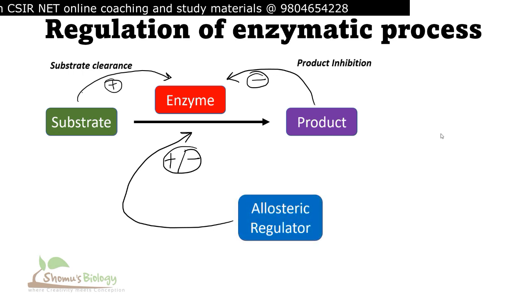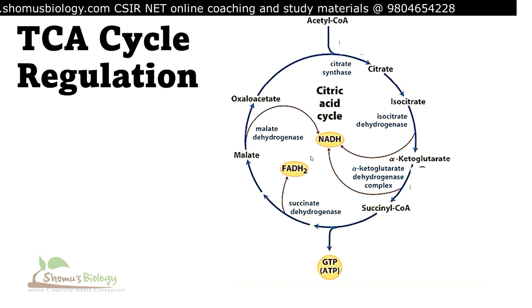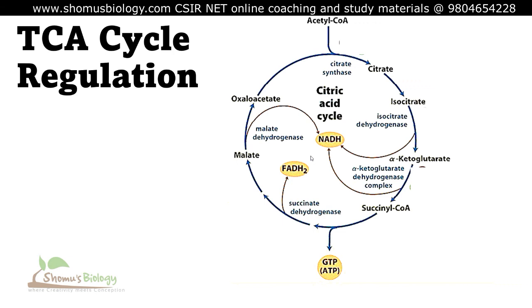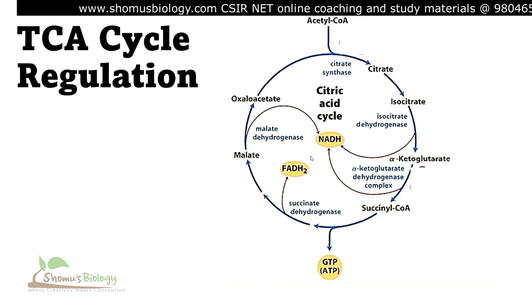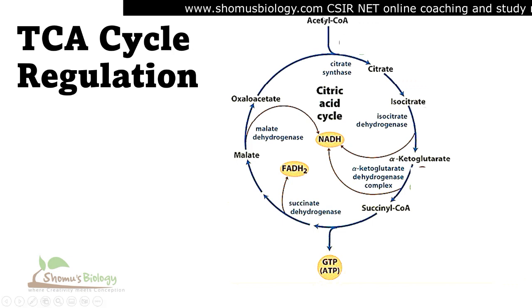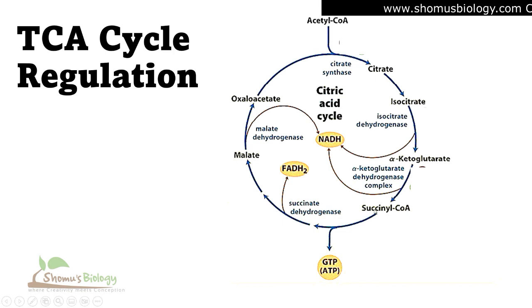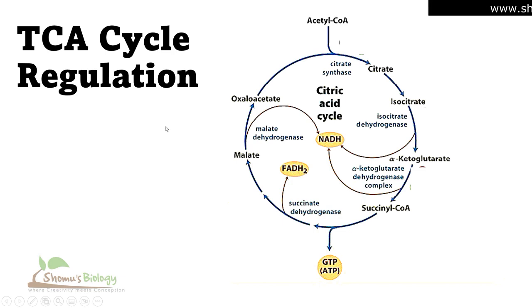Now we are going to talk about TCA cycle regulation. The TCA cycle is also known as the citric acid cycle or tricarboxylic acid cycle. In the Krebs cycle, we start with acetyl-CoA, which associates with oxaloacetate to form citrate. Citrate becomes isocitrate, isocitrate becomes alpha-ketoglutarate, alpha-ketoglutarate becomes succinyl-CoA, which then becomes malate, and malate becomes oxaloacetate — and the whole cycle continues.